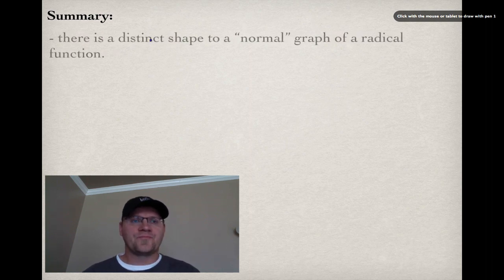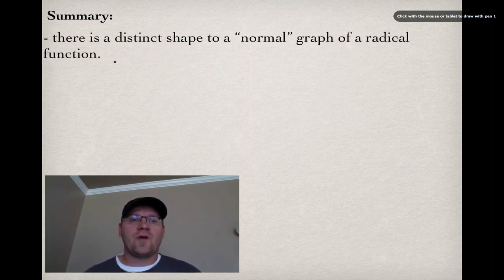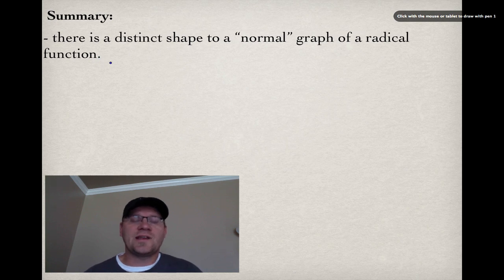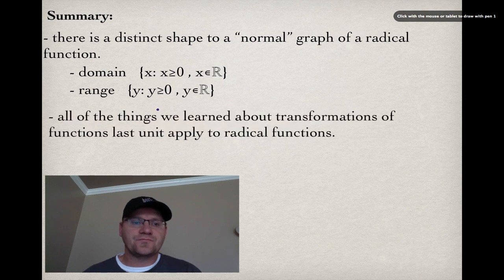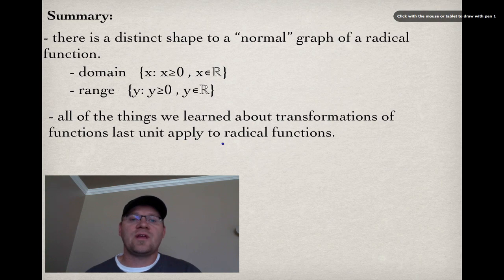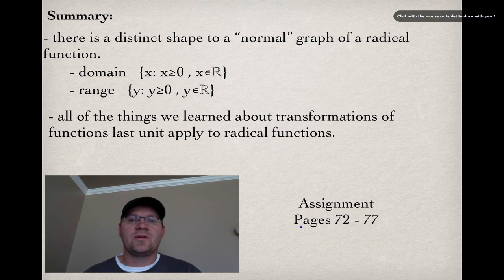So in summary, there's a distinct shape to a normal graph of a radical function. We know it has a domain of x greater than or equal to 0, and a range of y greater than or equal to 0. If there's a translation occurring, if it moves left or right, the domain will change. If it moves up or down, the range will change. We need to remember all the things we learned about transformations of functions last unit, because they apply to radical functions. So we're talking about stretches, translations, and reflections. Finally, your assignment is on page 72 to 77, and good luck.